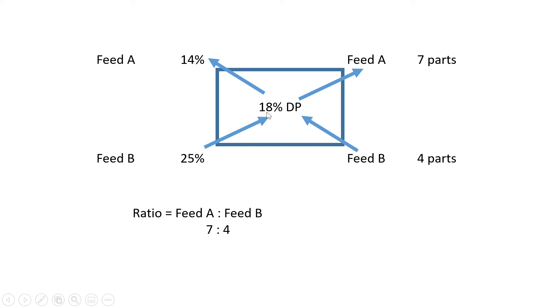14 minus 18 gives you four parts. Here we used the value for Feed A to figure out the parts for Feed B—you literally cross over. Feed B is four parts. To get the ratio, you say Feed A to Feed B—fill in the parts: Feed A is seven parts to Feed B which is four parts. Seven to four is literally your answer. When they just want the ratio, this is where you stop.